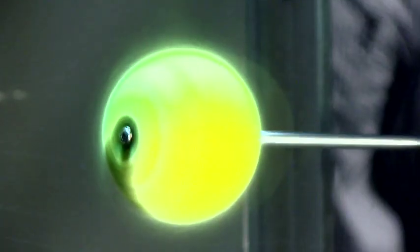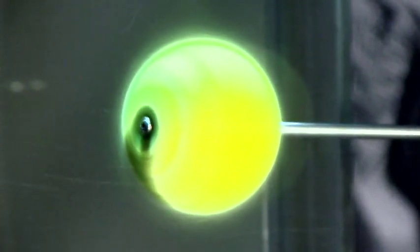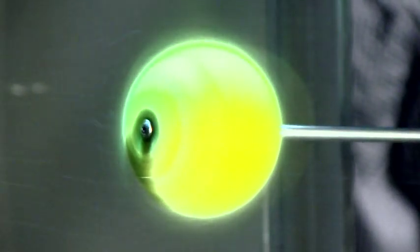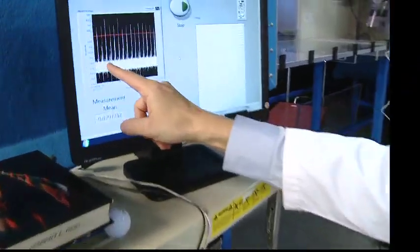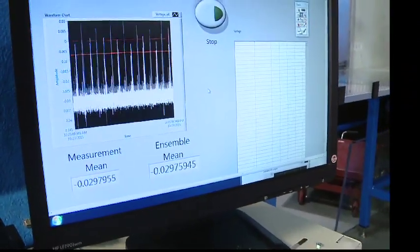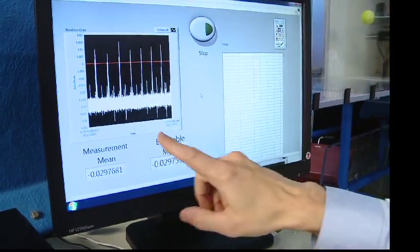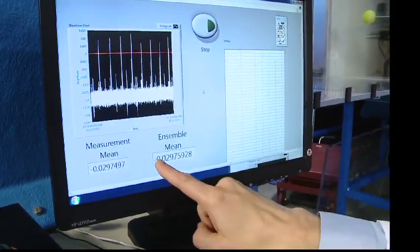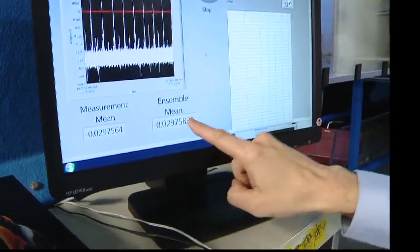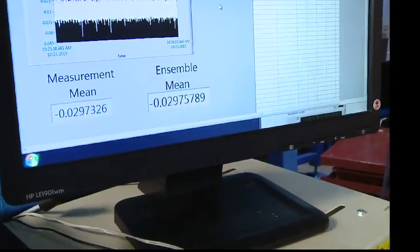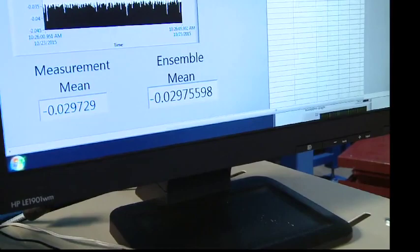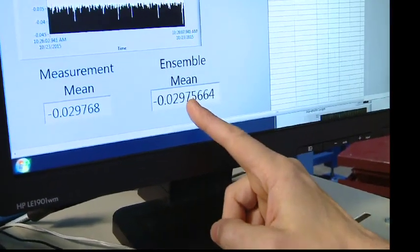Now we're ready to take data. And every second, it's taking 3,000 data points. This is our data here coming across. You can see that there's some strong periodicity in the data. And then the average of this is being recorded here. This is the ensemble average.